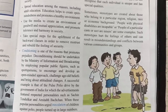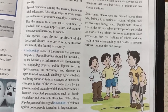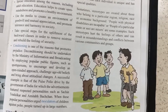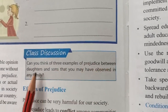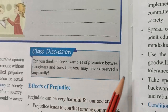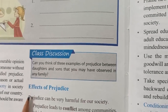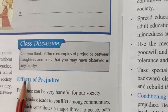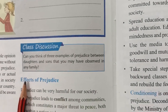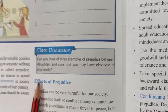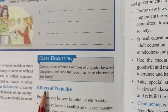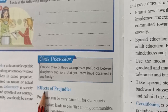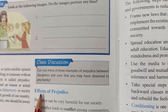So we can reduce prejudice. That's it for today. For your online class, you have something to do: can you think of three examples of prejudice between daughters and sons that you may have observed in your family? You have to think of three examples where daughters and sons are treated differently in your family. You will do this and we will discuss it in our online class. Please watch the video carefully and have a nice day.